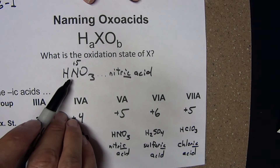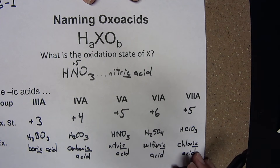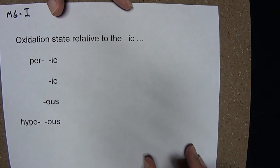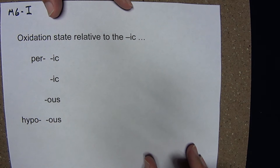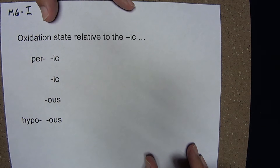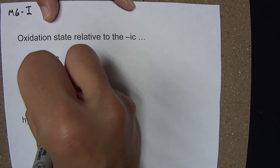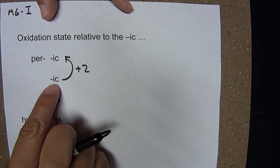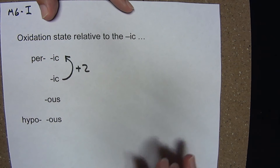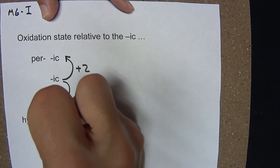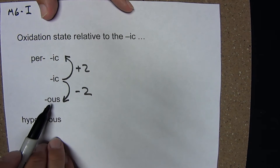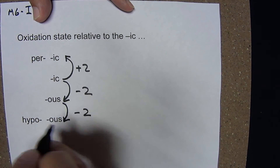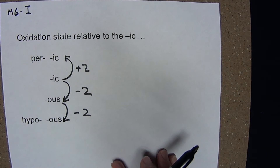So we can identify the oxidation state of X and know what the ic acid is for a given X. Once you identify the ic acid, knowing the oxidation number relative to the ic allows you to name the compound. If the oxidation state of X is 2 more than the ic acid, you have the per-ic acid. If it's 2 less than the ic acid, you have the -ous acid. If it's 4 less than the ic acid — 2 less than the -ous — you have the hypo-ous acid.